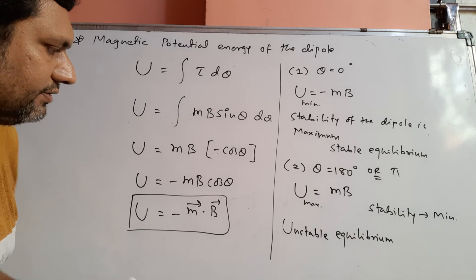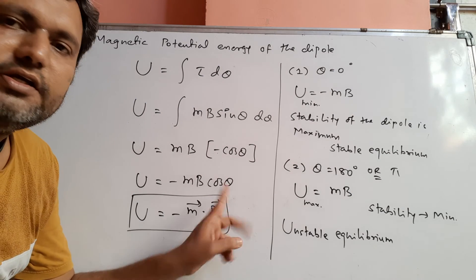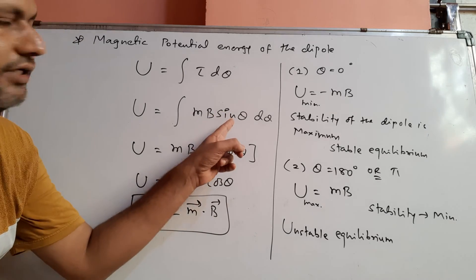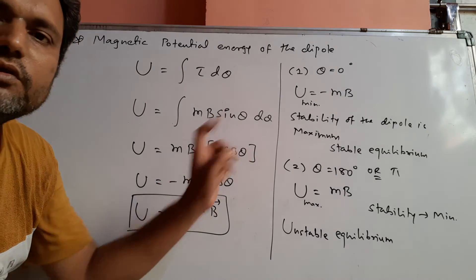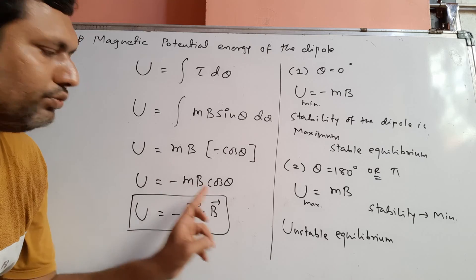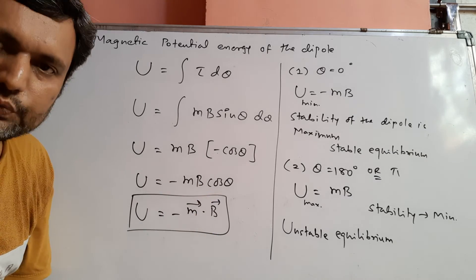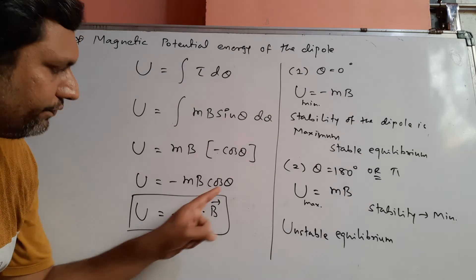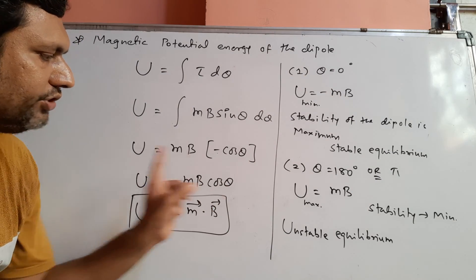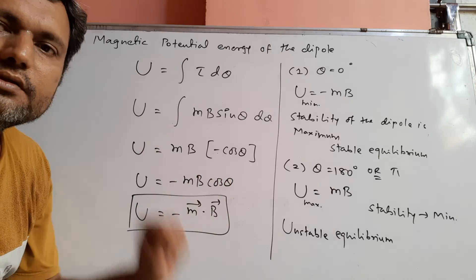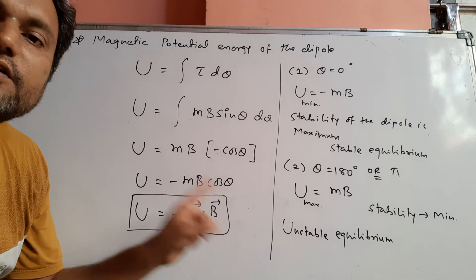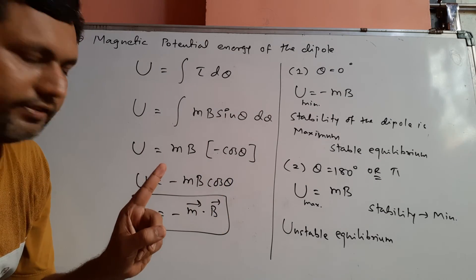When theta equals 90 degrees, cos 90 is 0, so U equals 0. The potential energy is zero when theta equals 90 degrees. However, at this position the torque is maximum.